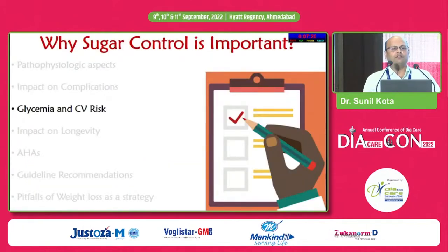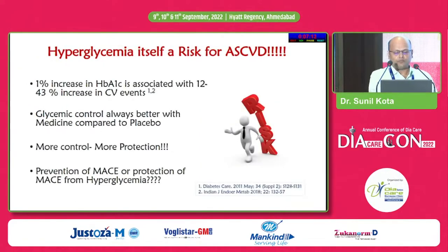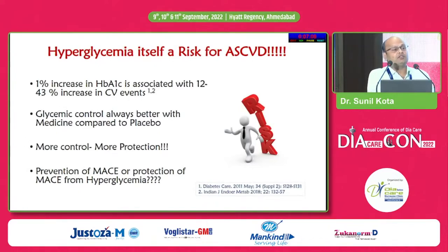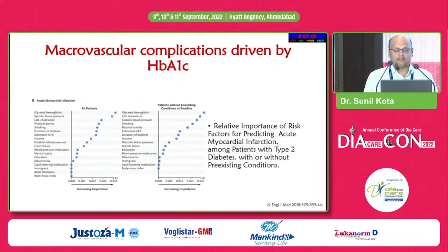What about cardiovascular risk? There are a number of proposed mechanisms: epigenetic modification, inflammation, oxidation, and AGE formation. The data clearly tells us that a 1% increase in HbA1c is associated with a 12 to 43% increase in CV events. Therefore glucose control needs to take center stage.